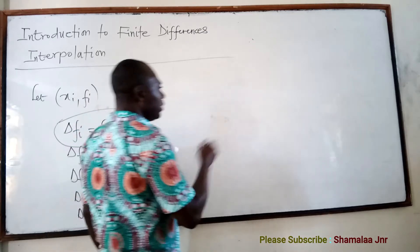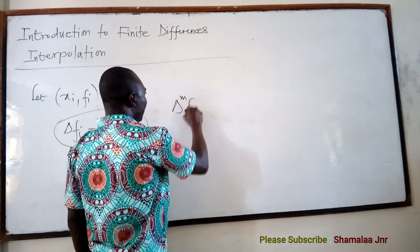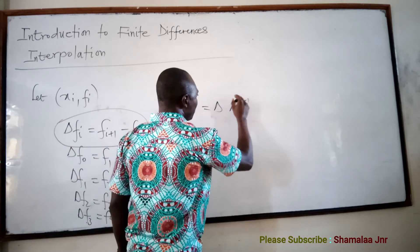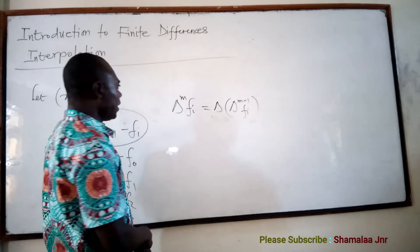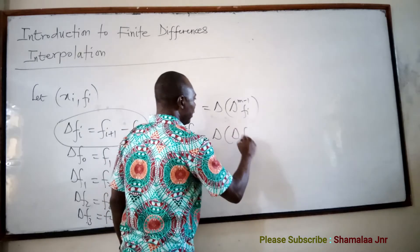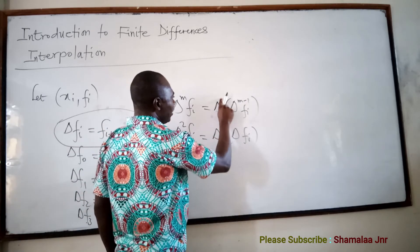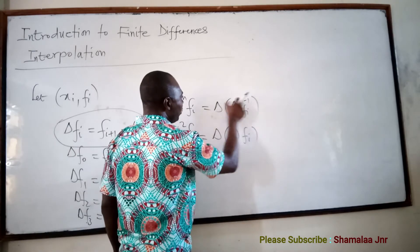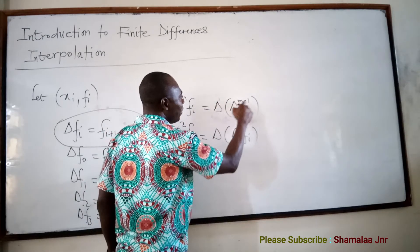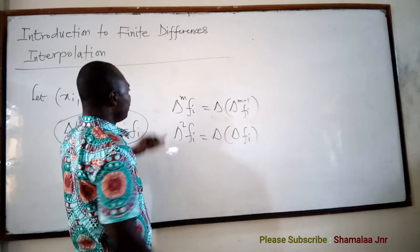Higher order differences are defined by delta^M Fi equals delta^(M-1) Fi+1 minus delta^(M-1) Fi. When you add the exponents, they should give you M. So if one exponent is 1, then 1 plus M minus 1 gives you M. Higher order differences are defined by this formula.